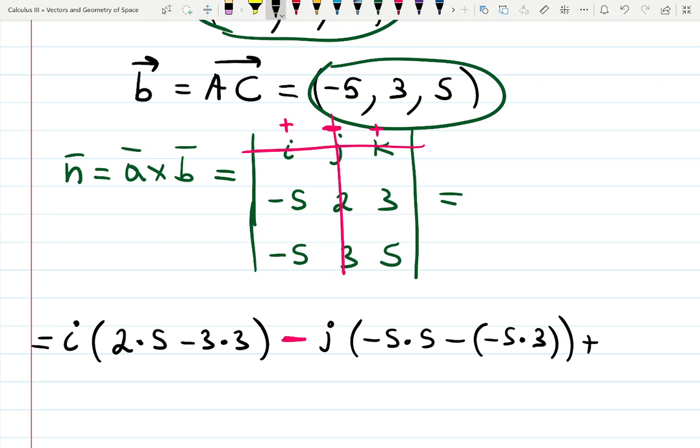Plus, and the last one. K. Also bombing. So it will be cross product. Minus 5 times 3 minus negative 5 times 2. Like so.